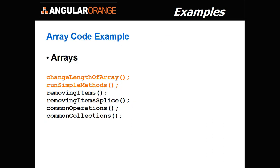Let's run the code example for arrays. My arrays project has several methods in it. We'll look at the simple methods and object properties type of stuff initially and take a look at that.